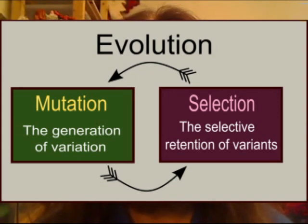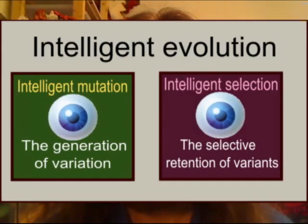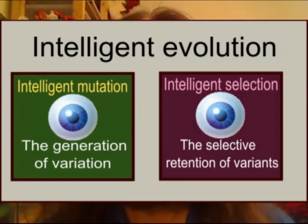Here, the processes responsible for generating variations in inherited genetic information are represented on the left, and the processes responsible for deciding which variants persist are represented on the right. When intelligence affects the processes responsible for generating variations, that's a type of directed mutation, which we'll call an intelligent mutation. When intelligence affects the processes responsible for deciding which variants persist, we'll call that intelligent selection.